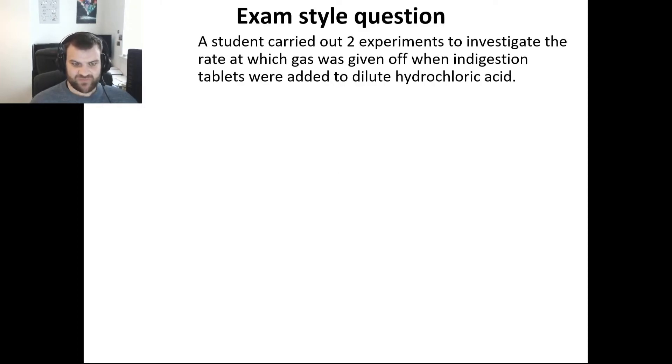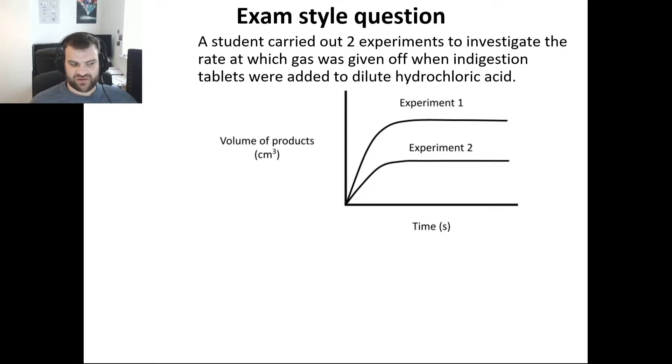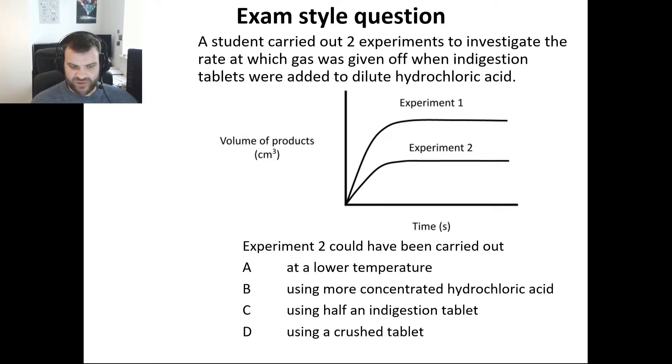A typical type of question: two experiments have been carried out to investigate rate and we're given our graphs that look like this, and we're asked to say how we can end up with the graph for experiment two. In this case they give you four options and we'll go through them one by one.